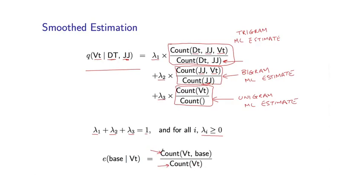And on the numerator, I simply have the number of times that I've seen the tag vt paired with the word base. And we simply take the ratio of these two terms. So it's a blindingly simple estimate.